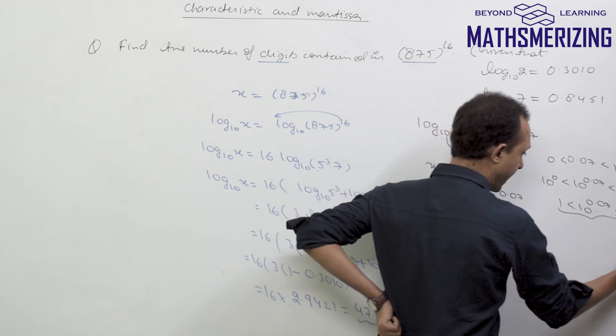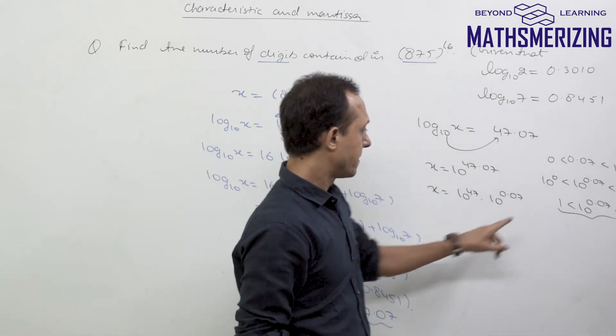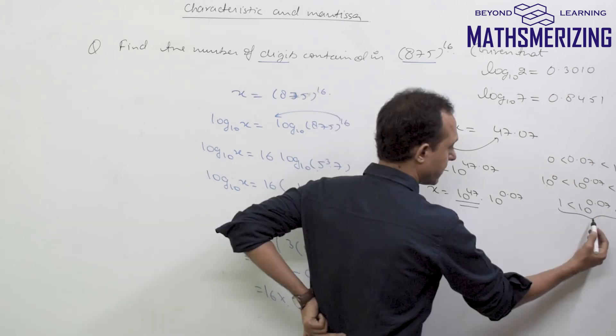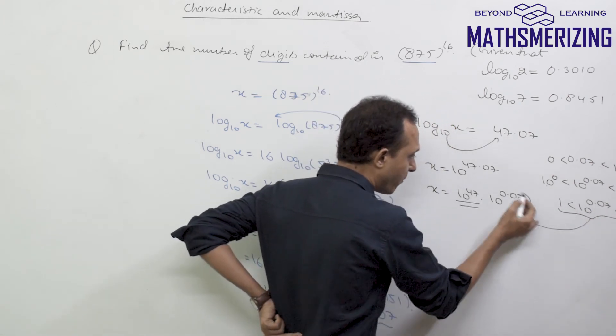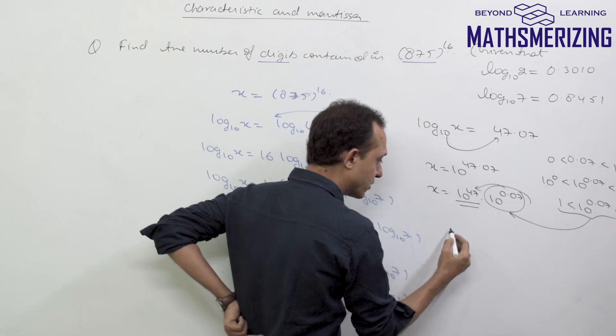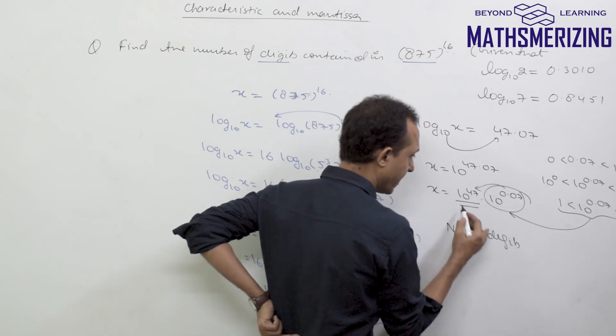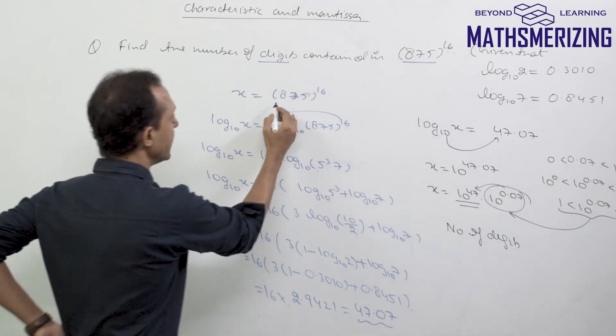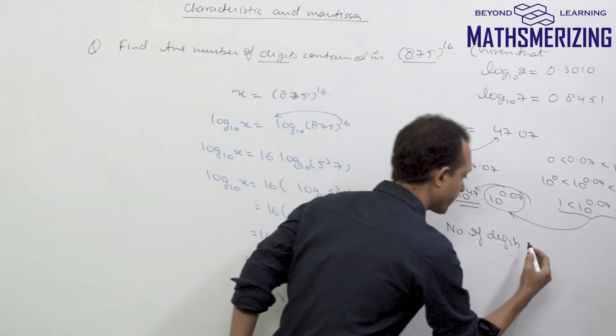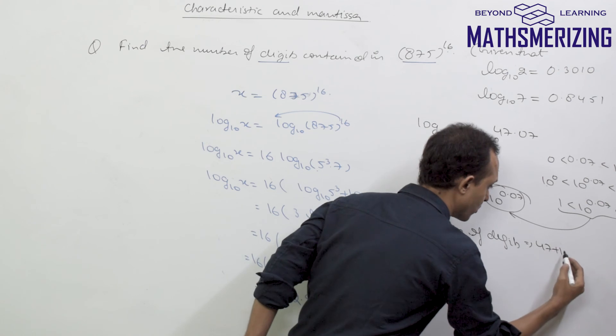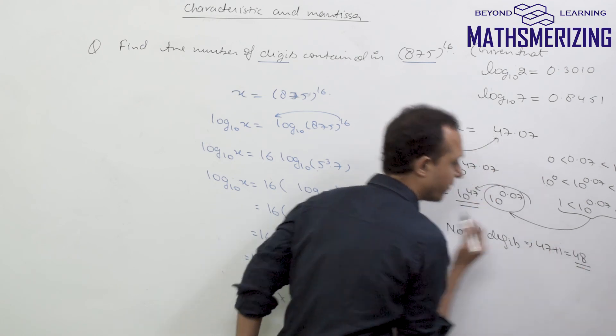So it is a number between 1 and 10. That means I need to add one more digit to 47. So the number of digits in 875 to the power 16 is 47 plus 1, which is 48.